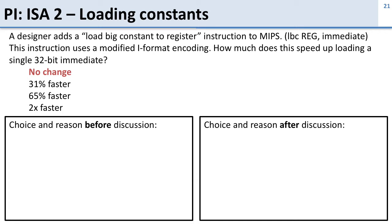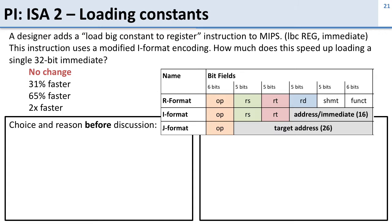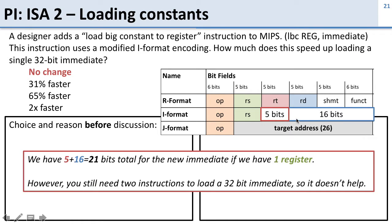The answer is it's not going to change things at all. We take this part of the immediate field and add in these bits, giving us more bits — 21 bits of immediate — but that's not quite enough. We still need two instructions to load a full 32-bit immediate, so that doesn't actually speed things up over what we had before, where we needed two instructions to load two 16-bit immediates.